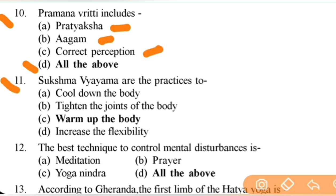Sukshma Vyayama are practices to — right answer is C — warm up the body. Next: the best technique to control mental disturbance is — right answer is D — all of the above: meditation, prayer, and yoga nidra.